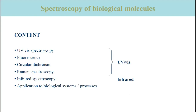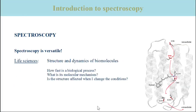Apart from the fundamentals of these techniques, we will also discuss some of their applications in biological systems and biological processes. The methods we discuss are very versatile and used for many different applications, not only in the life sciences. In the life sciences, these techniques are used to study the structure and dynamics of biomolecules. Examples of research questions are: How fast is a biological process? What is its molecular mechanism? And is the structure of a biomolecule affected when conditions such as temperature or pH value are changed?